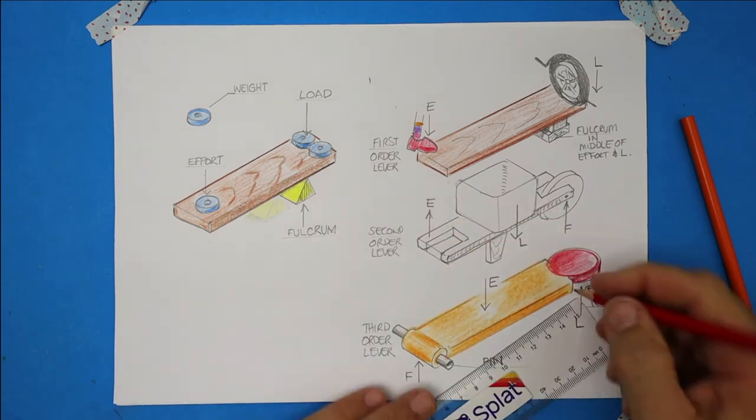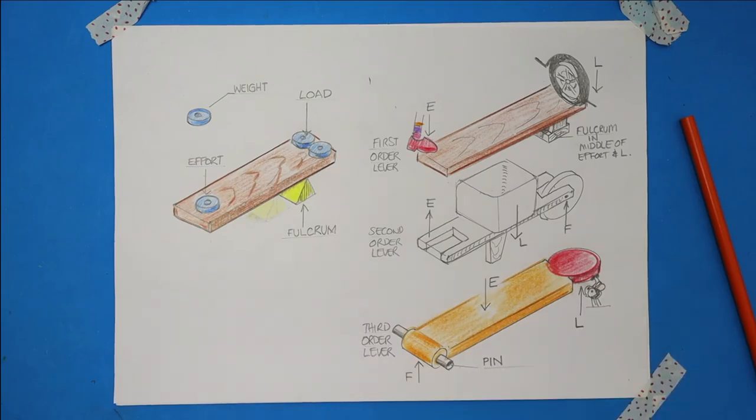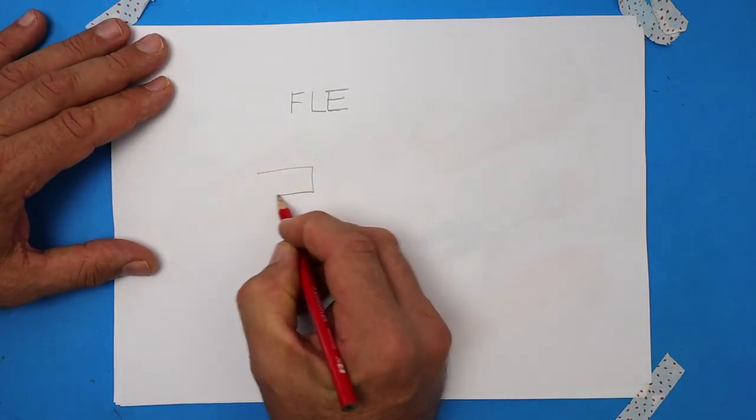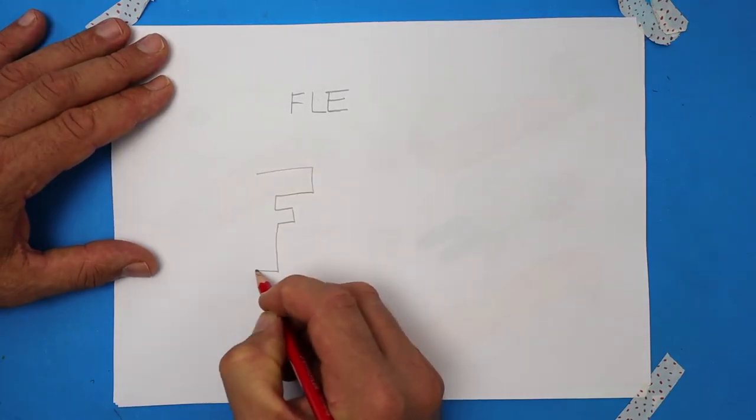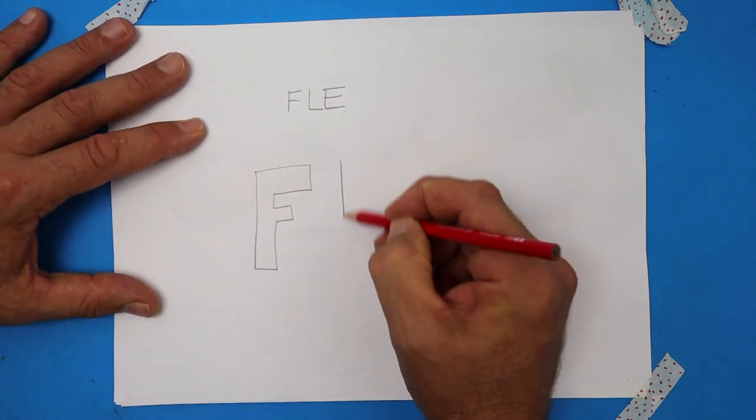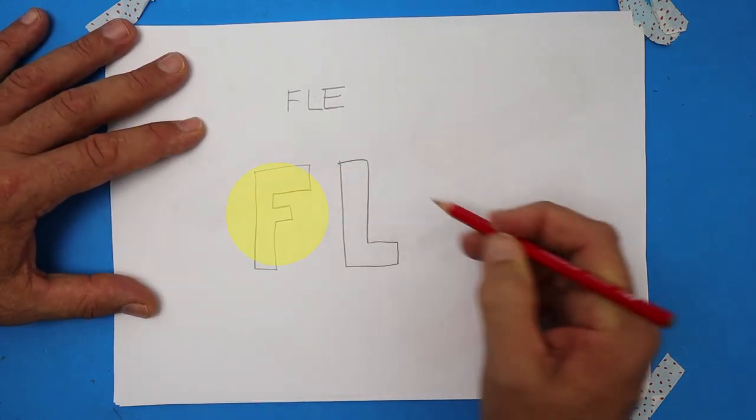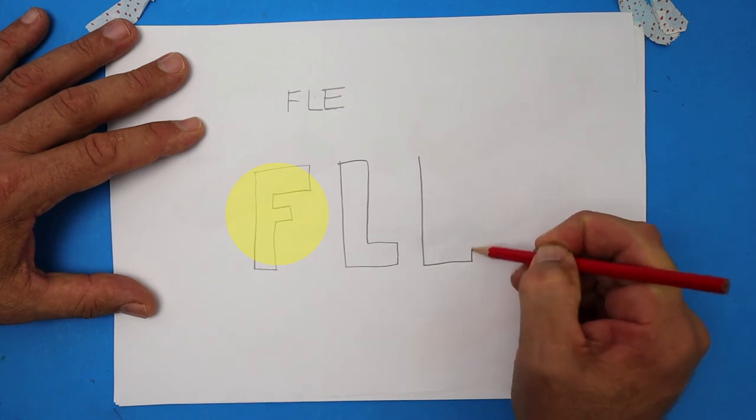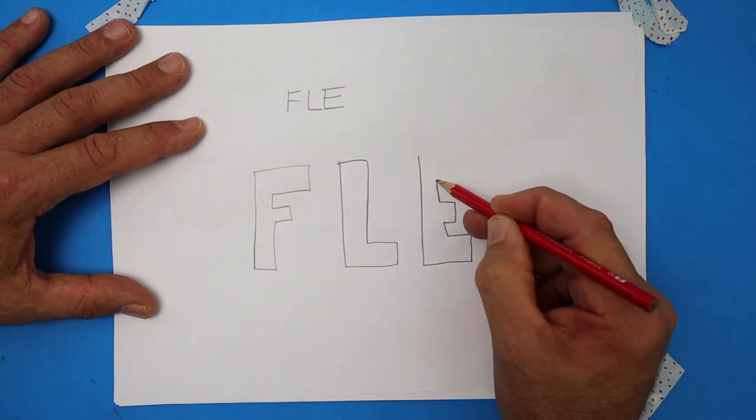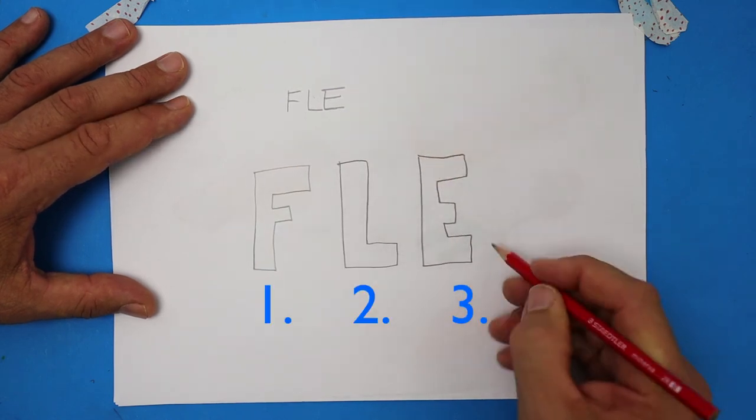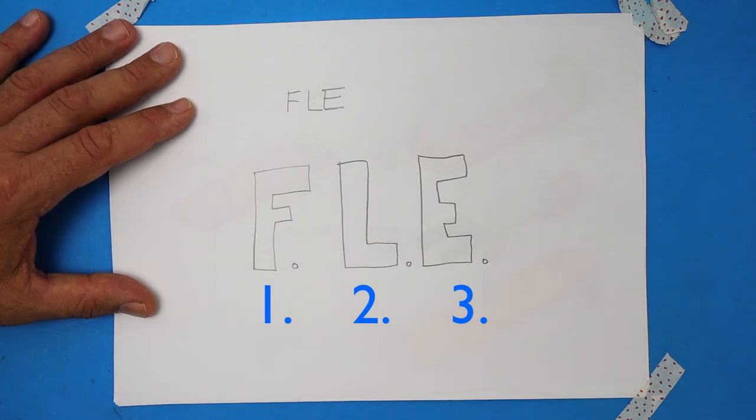Excellent. You have done so well today. Remember I promised you a really easy way to remember these. It's actually a very common saying. FLE. So the first order lever has F or the fulcrum in between and so on. So just write FLE, put a 123 and that's how you remember. Easy.